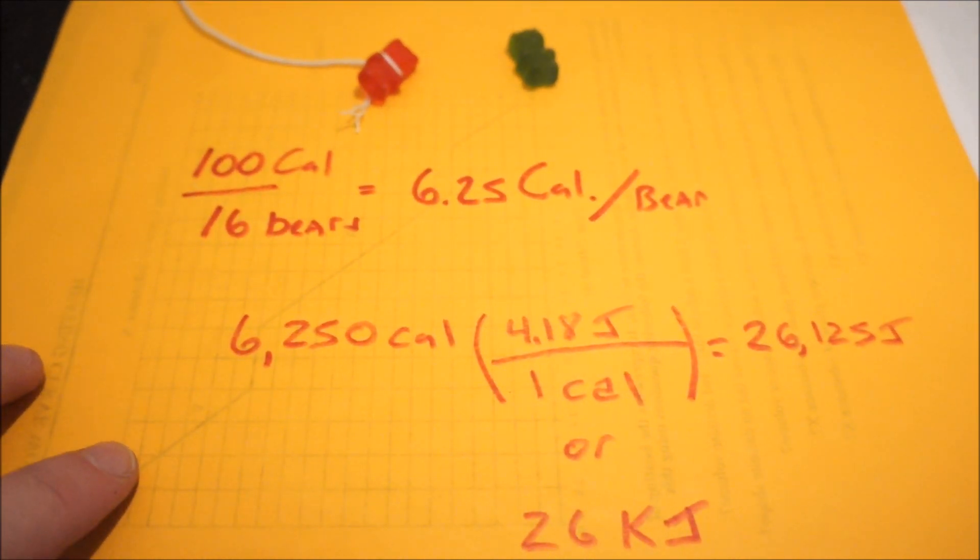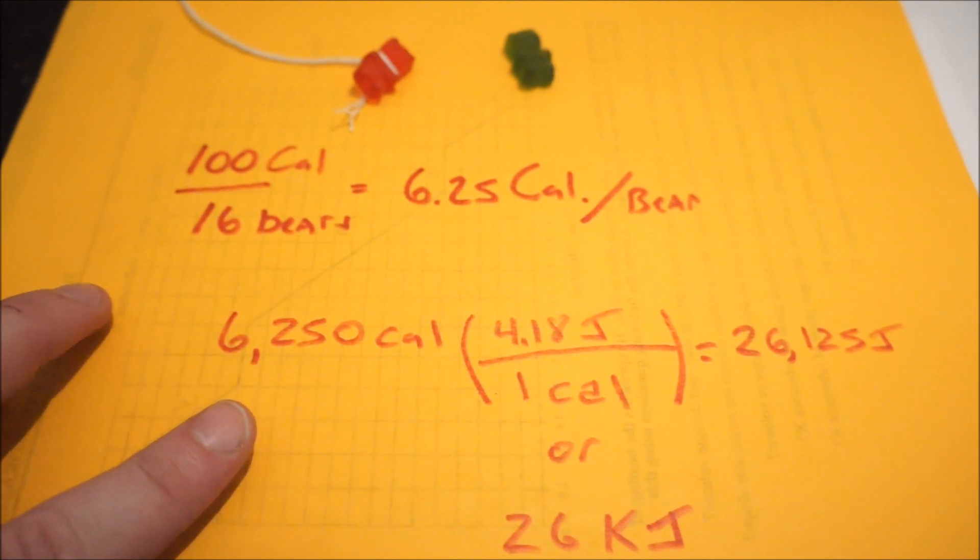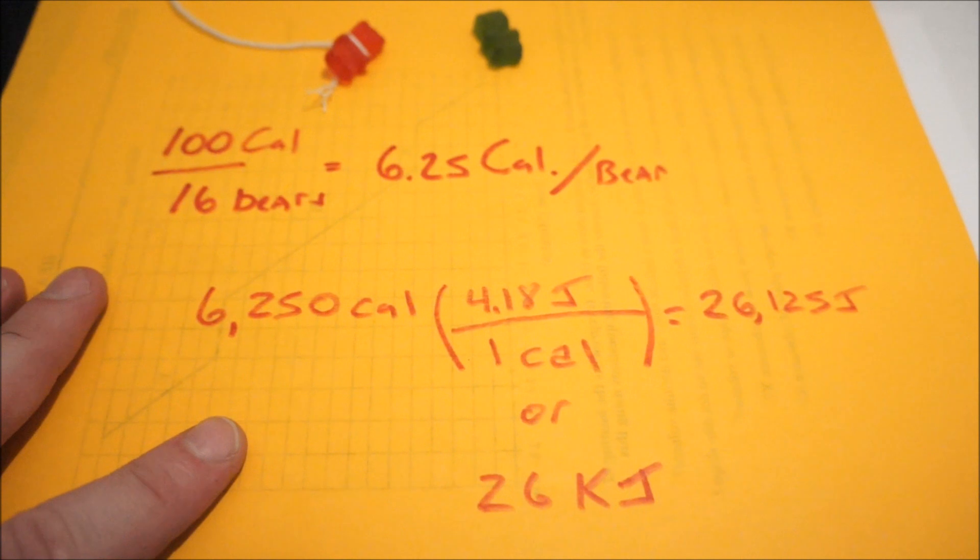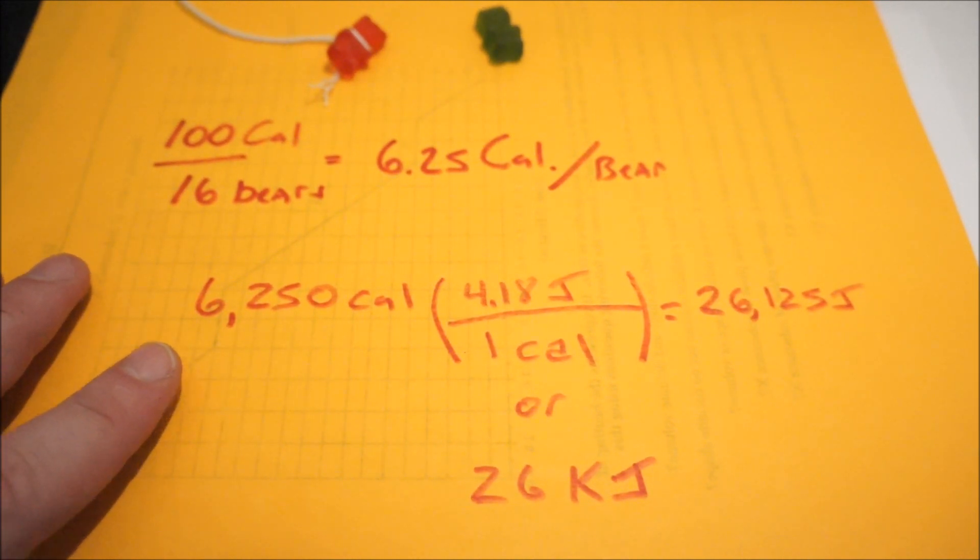Now, those are food calories, so you multiply that by 1,000 and you have 6,250 calories. Times by the conversion to get the joules, 4.18, and you get 26,125 joules, or roughly 26 kilojoules. And this is the energy I'm going to demonstrate.